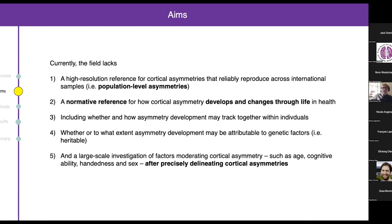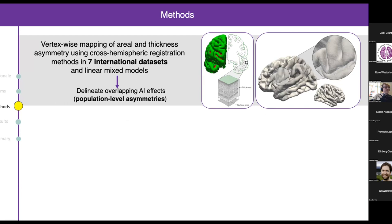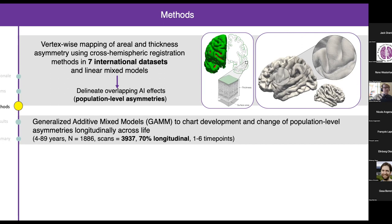In terms of methods, we started by doing a vertex-wise delineation of area and thickness asymmetry, basically flipping the data from one hemisphere to the other and directly comparing across the brain. We did this in seven international datasets using linear mixed models and delineated the overlapping effects in cortical thickness and surface area asymmetry. We charted developmental and lifespan trajectories using generalized additive mixed models, with really dense longitudinal lifespan data — up to 4,000 scans, 70% of which are longitudinal with up to six time points per person.